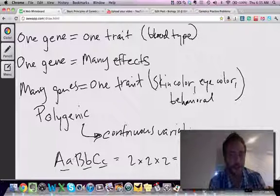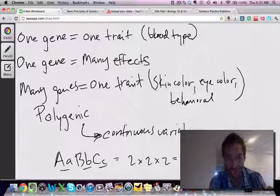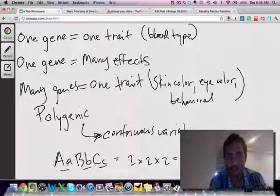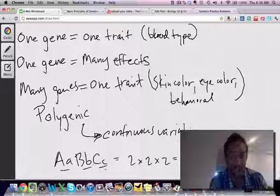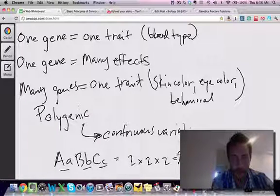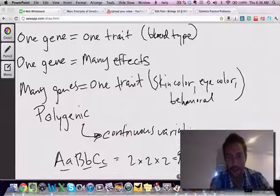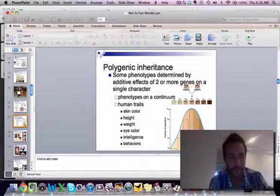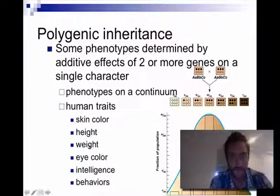And that's only with three genes. So if we have more genes than that, and we have incomplete dominance, codominance, multiple alleles, this number can get much higher. Human skin color is a good example of this.